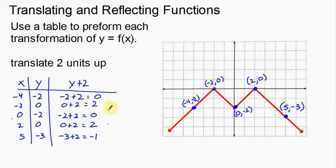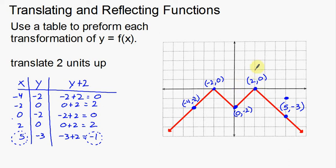This gives me a whole new set of y coordinates to use. The x's are going to be the same — the x coordinates don't change, only the y coordinates change. So my new points use the same x coordinates with the new y values: negative 4, 0; negative 2, 2; 0, 0 — which is right at the origin; 2, 2; and 5, negative 1.